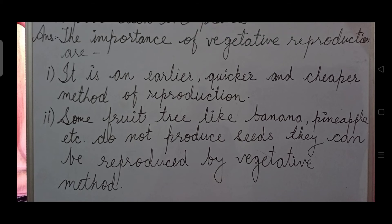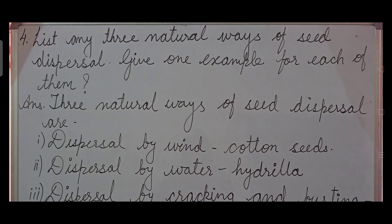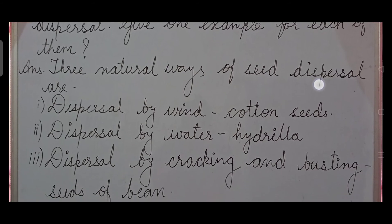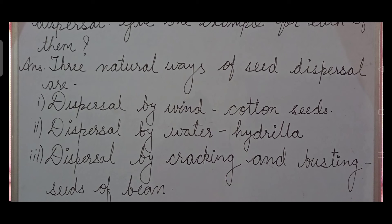Question number four: list any three natural ways of seed dispersal and give one example for each. Answer: Three natural ways of seed dispersal are dispersal by wind, dispersal by water, and dispersal by cracking and bursting — for example, seeds of beans.